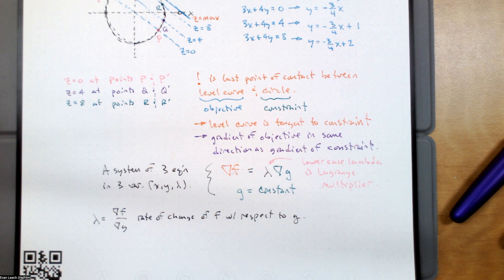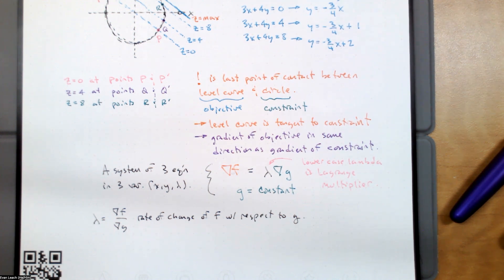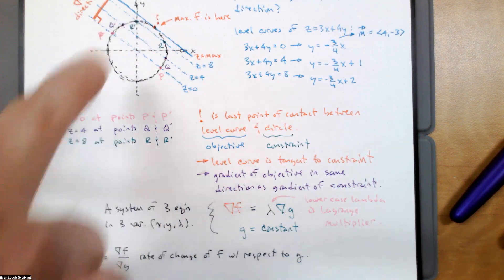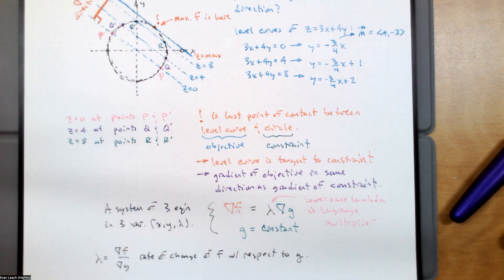That's it for today. This is our second part of constrained optimization. We'll use this tomorrow to solve the problem and find that point. But for now, find that point without this particular process. I will see you all tomorrow — everybody have a good day and thanks for playing.